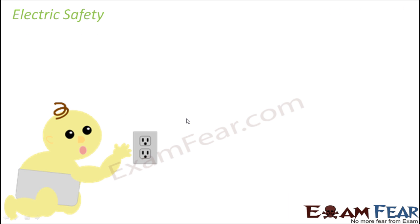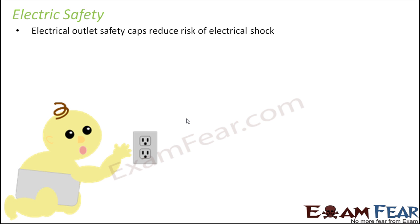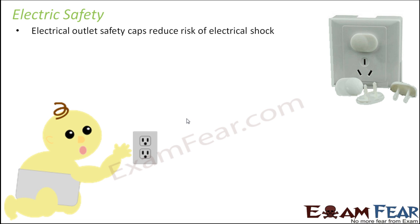Let us look at some measures that can be taken for electric safety. We should ensure that electrical outlets are out of reach of children — either by placing them at a greater height or by using electrical outlet safety caps. These caps reduce the risk of electrical shocks. The outlets without caps are open, and children can try to insert their fingers inside them. With caps in place, it is much more difficult. These caps are made of materials that are poor conductors of electricity, like plastic, which does not conduct electricity, so the chances of getting a shock are reduced.